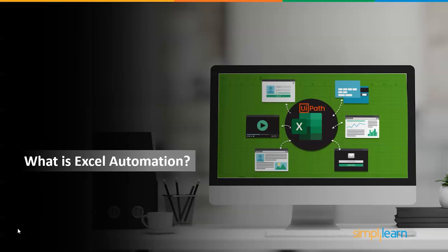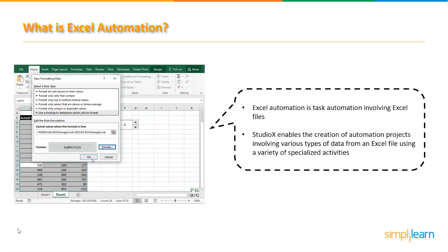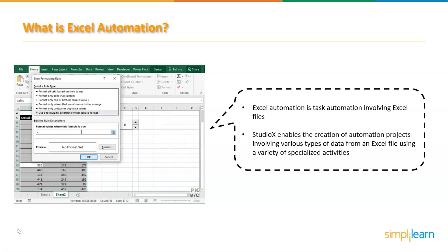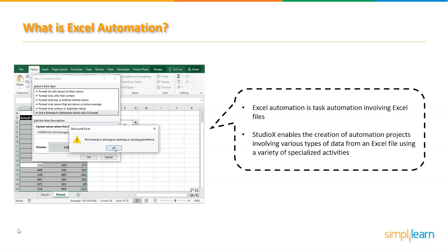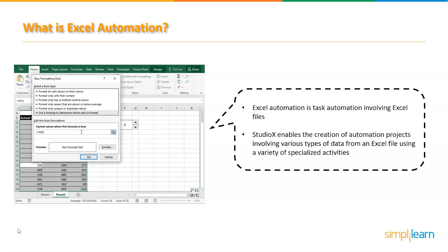What is Excel automation? Excel automation is a task automation involving Excel files. Studio X enables the creation of automation projects involving various types of data from an Excel file using various specialized activities. To create an Excel automation we must use the Excel file resource when creating a new project that includes Excel. An Excel file must be specified within it so that all subsequent actions can access the data contained within that file.